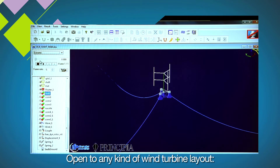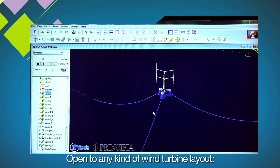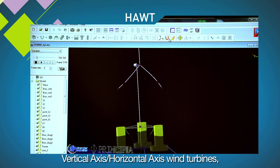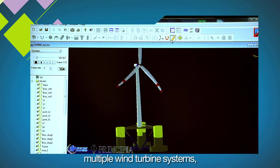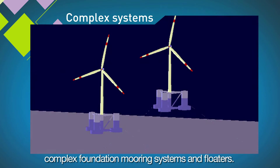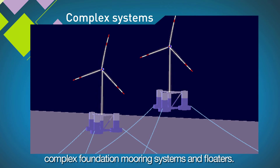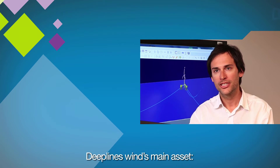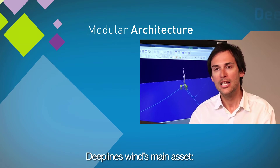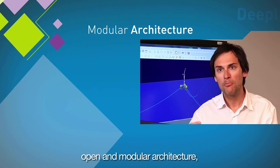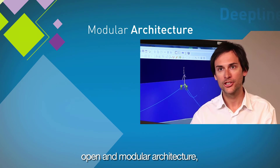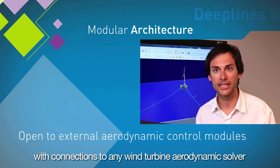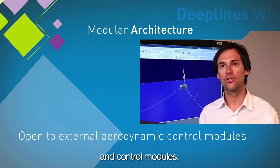It is open to any kind of wind turbine layouts: vertical axis wind turbines, horizontal axis wind turbines, multiple wind turbine systems, and complex foundation mooring systems and floaters. The main advantage of DeepLine Wind lies in its open and modular architecture, with possible connection to any wind turbine aerodynamic solver and control modules.